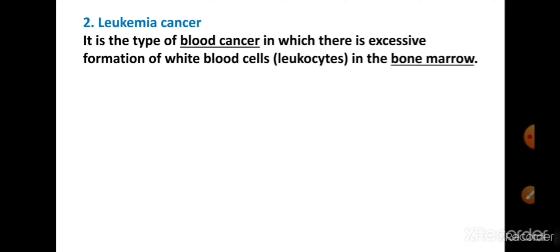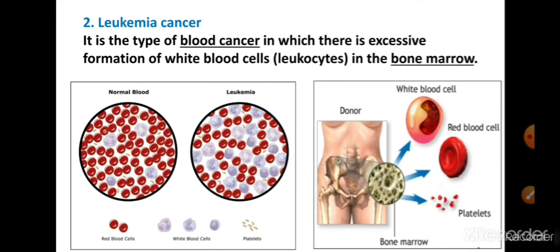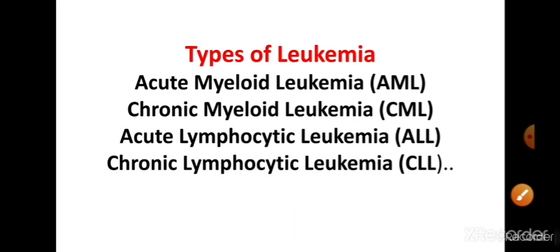इसके बाद है leukemia, जो cancer का second type है। यह एक type का blood cancer है जिसमें bone marrow में white blood cells का excessive formation होता है। जैसा कि आपको पता होगा, bone marrow में white blood cells, red blood cells और platelets produce होते हैं — जब WBC का excessive production होता है तब leukemia होता है।